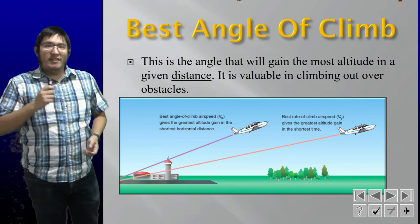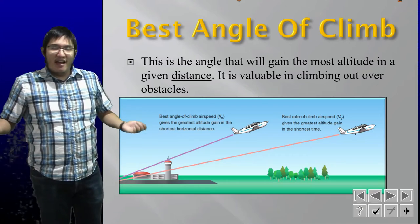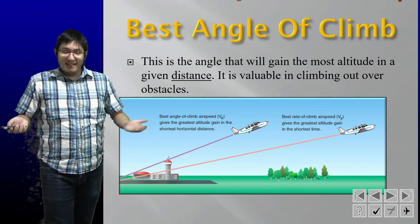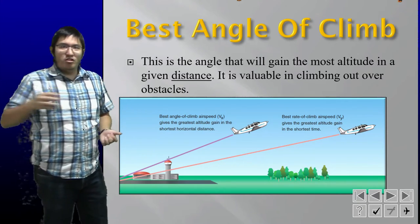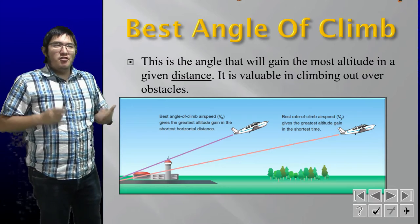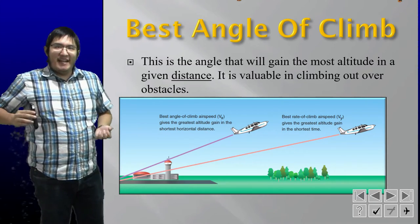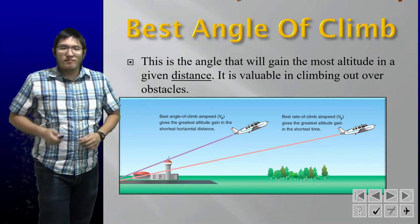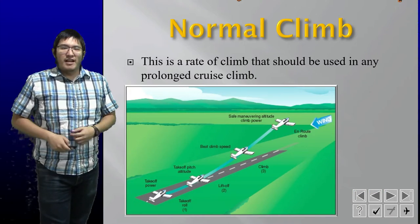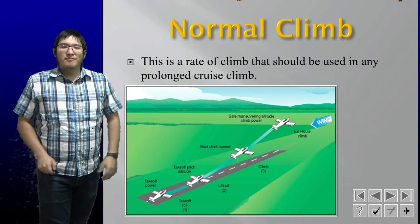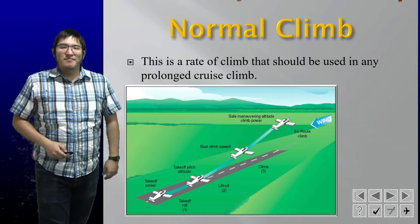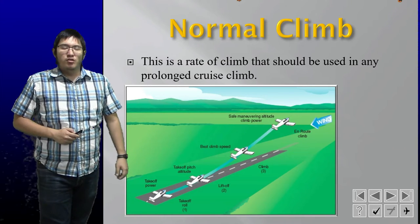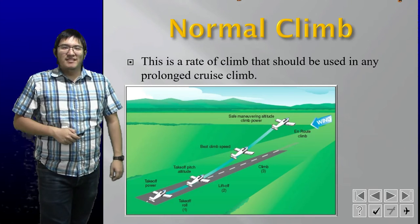Best angle of climb is known as VX. Another memory aid: X is the horizontal axis, so VX gives your best performance in the horizontal direction. Once you clear the obstacle, you can pitch back down to your best rate of climb. A normal climb is a standard climb used for any prolonged cruise climb.